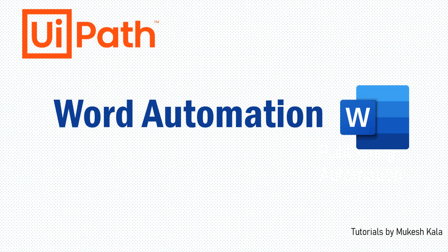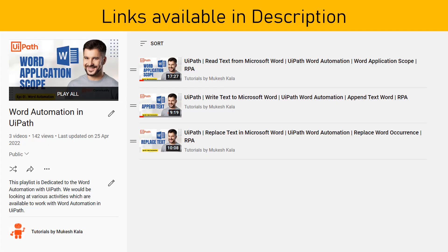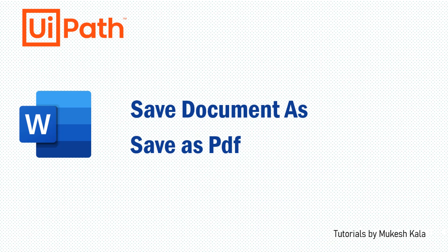Hi everyone, welcome back to the channel. This is the next video in the word automation series with UiPath, where we are exploring the various automation activities available for Microsoft Word automation. In the previous videos of the series, we have already covered word application scope, how to read text, write or append text, and the replace text activity. Today in this video, we are going to see how to save the document in various formats and also how to export the Word document to a PDF.